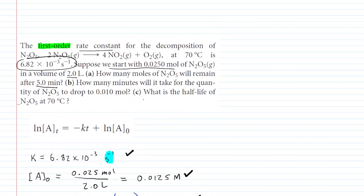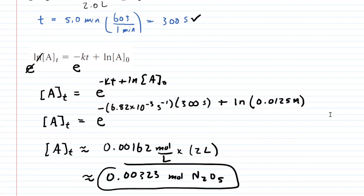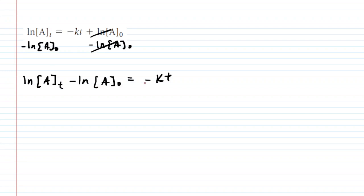Let's go back up and check out what part B is asking. It wants how many minutes will it take for the quantity of N2O5 to drop to 0.010 moles. So we're going to use the same equation, but this time, because they're asking us to calculate a number of minutes, that's a time. We're going to have to rearrange the equation just a little bit. So here's the original equation, and we're going to subtract the natural log of the initial concentration here. And that's going to cancel it out on the right-hand side. And then to solve this equation for time, we will divide both sides by negative K. And that way, the negative K cancels out on the right-hand side.